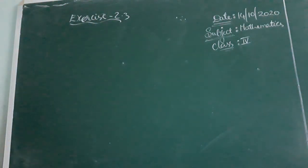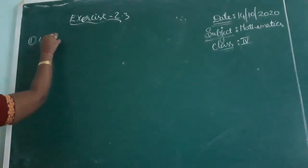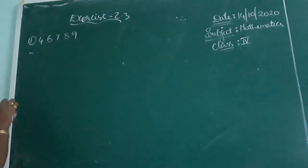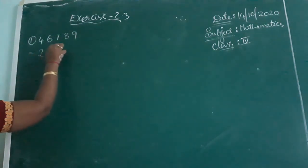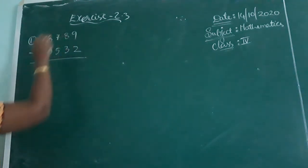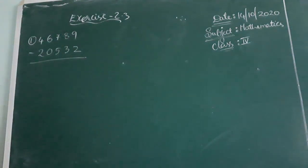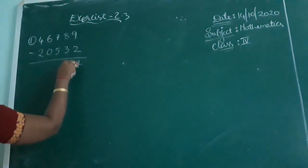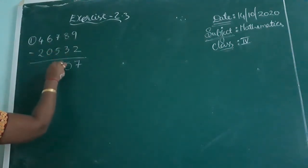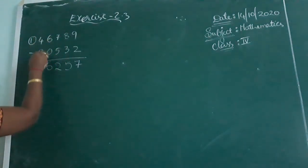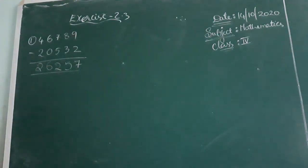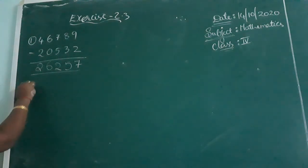See the first exercise. 46,789 minus 20,539. If you subtract 9 minus 2, that is 7. 8 minus 3 is 5. 7 minus 5 is 2. 6 minus 0 is 6. 4 minus 3. It is a normal subtraction — no borrowing needed here. So what is the next one, the second problem?